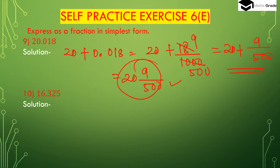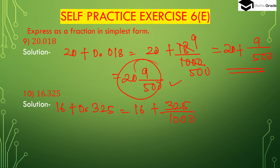Question number 10: 16.325. We can write 16 plus 0.325. After the decimal place there are 3 digits, so we have to divide 325 by 1000. 1000 has 3 zeros because there are 3 digits after the decimal place. So we have 16 plus 325 divided by 1000.